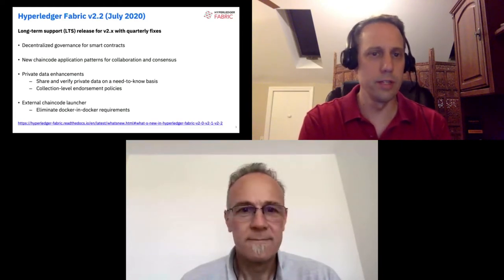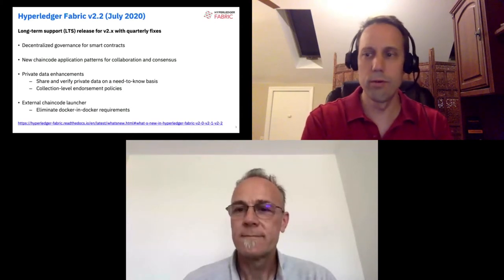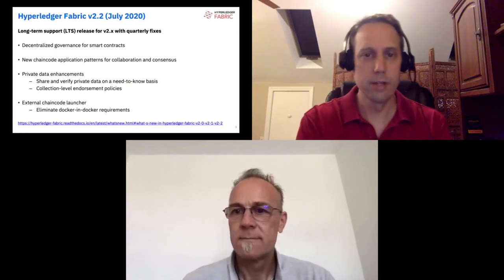I'll give a quick update on what we've been doing in the project the past year, in addition to the samples and tutorials. We released Fabric 2.2 in July of 2020. This is the long-term support release that most production customers are on currently, with most users moving up from 1.4 to 2.2. Fabric 2.2 provides a lot of good things. First and foremost, decentralized governance for smart contracts, which allows you to set up policies for which organizations need to agree on a smart contract deployment or update. You can use those same patterns in your own chain codes for agreements and approvals.